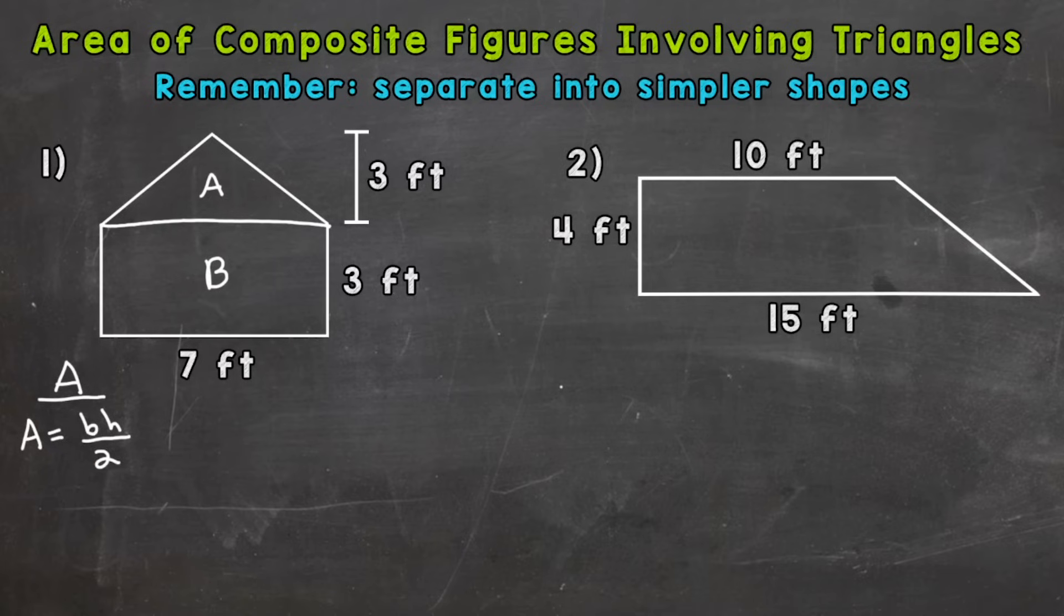You may use one half times base times height for the area of the triangle, that will give you the same answer. Dividing by 2 is the same as multiplying by one half. Let's plug in. Area equals the base of A, which is 7 feet, times the height, 3 feet, and divide by 2. So that gives us 21 divided by 2. Area equals 10 and a half square feet.